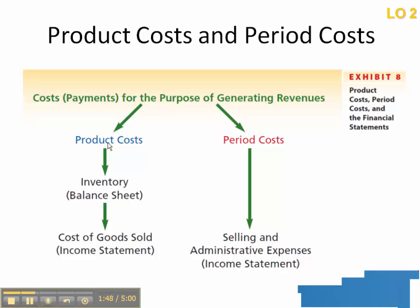Then you would have other costs that were related to making the baseballs — things like the leather and the lace. Those costs we would refer to as product costs, and the product costs we break into those three categories you read about: direct materials, direct labor, and factory overhead. What this exhibit is pointing out is that all costs are either going to be period costs or product costs. If they are product costs related to making that item, they don't get expensed immediately — they go to the balance sheet, and then when sold, that's when they would get expensed.